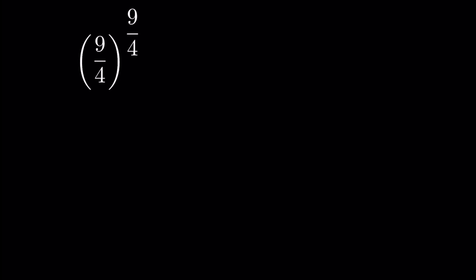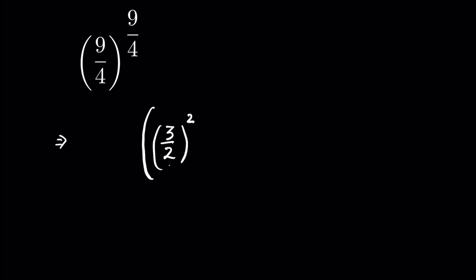9 upon 4 raised to the power of 9 upon 4 — how to solve this? This question looks difficult, but it is much easier than you think. 9 upon 4 can be written as (3 upon 2) whole squared, because 3 times 3 is 9 and 2 times 2 is 4. This can be written as 9 upon 4.